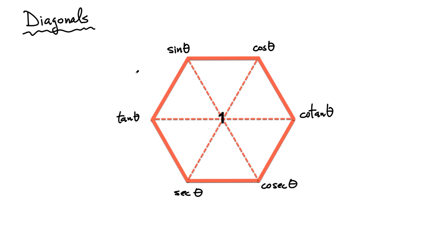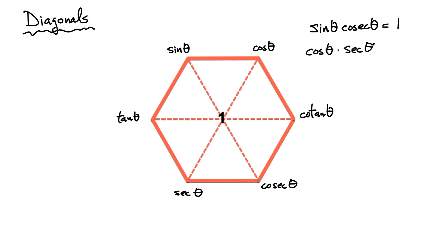I've modified the superhex a little bit — I've connected the diagonals and placed a one at the center. This trick involves the diagonals: sine multiplied by cosecant equals one. Cos multiplied by secant also equals one. And tangent multiplied by cotangent also equals one. So three more relationships from the diagonal elements of the superhex.